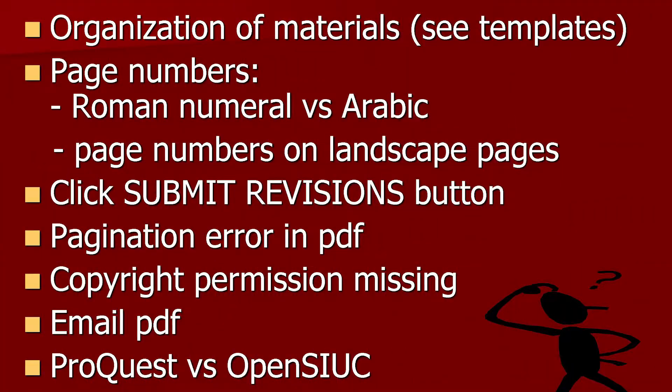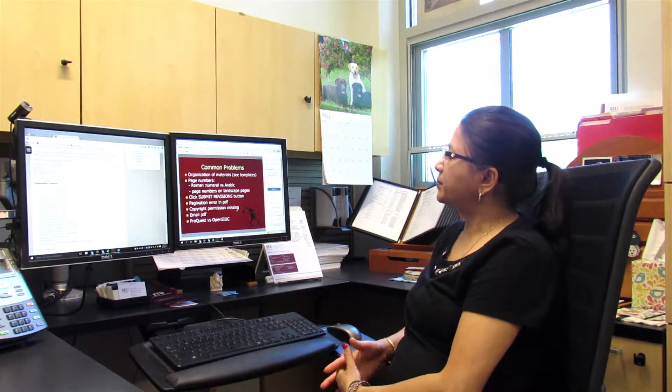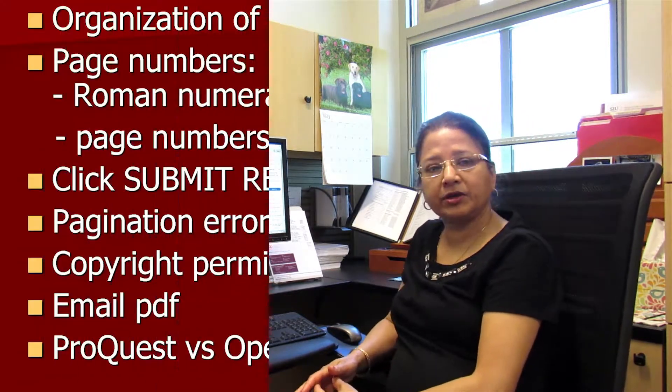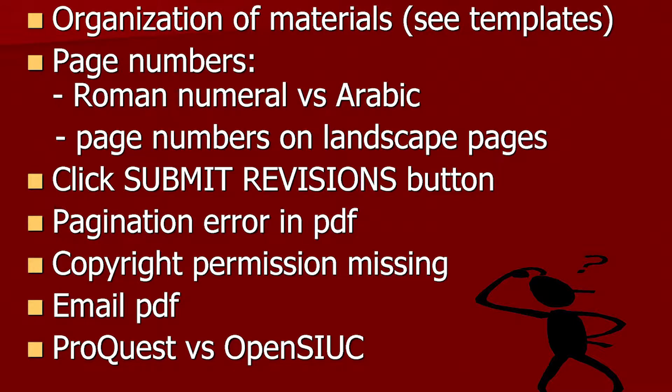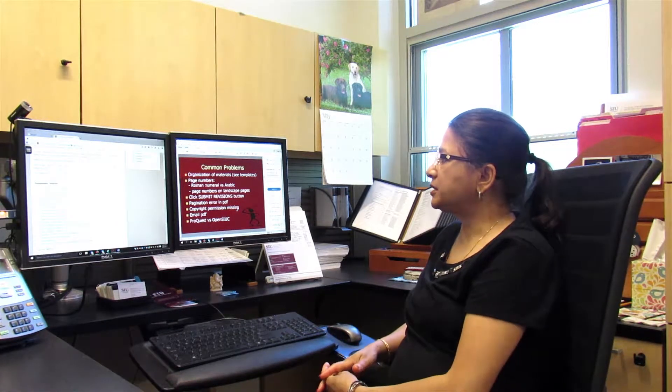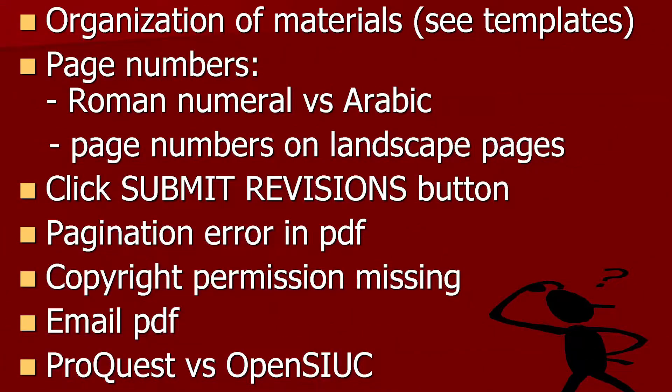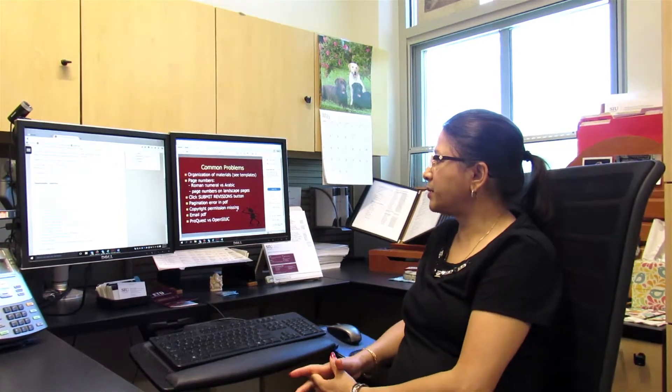Regarding page numbers: for front matter pages, you must use Roman numeral page numbers that are bottom centered. When you begin your chapters, start with Arabic page numbers, which are usually placed in the upper right corner or bottom centered. Sometimes students forget to click the submit revision button — be mindful about that. I also sometimes see pagination errors in the PDF, so double-check your page numbers. For copyright permission, if you take anything copyrighted from any source, you must obtain copyright permission.